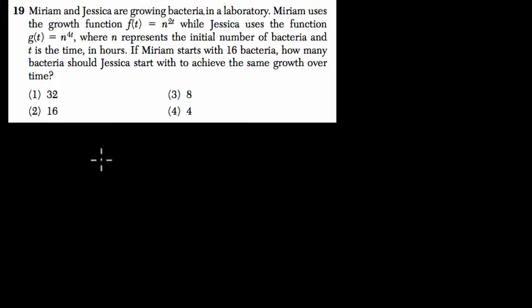Miriam uses the growth function f(t) = n^(2t). So that's some kind of exponential function. And then Jessica uses a different function, g(t) = n^(4t), where n represents the initial number of bacteria, and t is the time. So n is the starting bacteria amount, and t is the time.